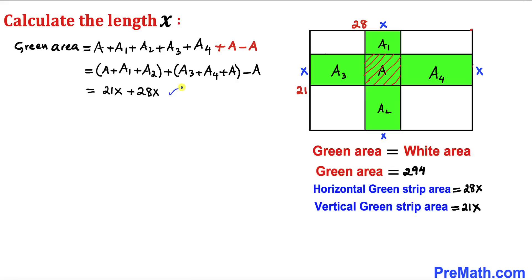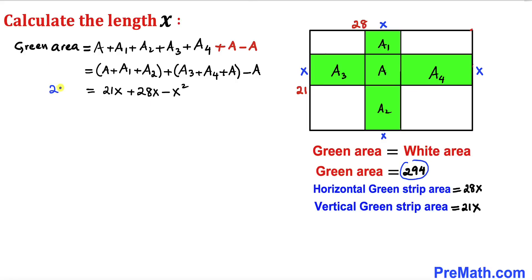Now let's focus on area A — it's the square in the middle with dimensions x by x, so its area is x². Therefore we subtract x² in our equation. We already know the green area is 294, so substituting: 294 equals 21x plus 28x minus x². Combining like terms: 294 equals 49x minus x².